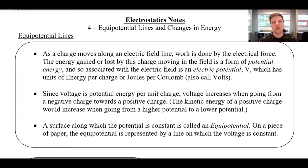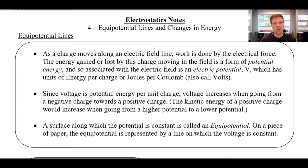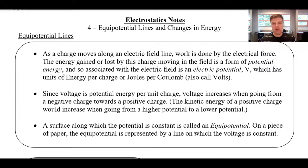If you have a charge that's moving in an electric field, the direction of an electric field line would be the direction that a proton would want to move in that field. So if you have a proton following some electric field line through a field, then work is being done on that charge. As it follows the field line, we're doing work on the charge, and if we're doing work, then the potential energy of that charge must be changing. So as we move charges around, we're changing the potential energy. This relates back to the idea of potential because charges or fields have areas of high — if it's a positive charge — or low potential.